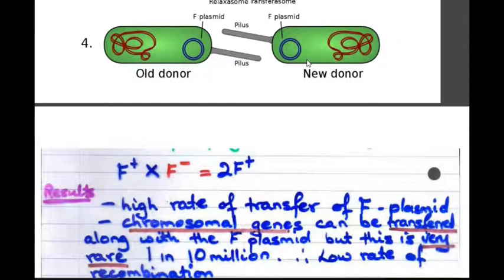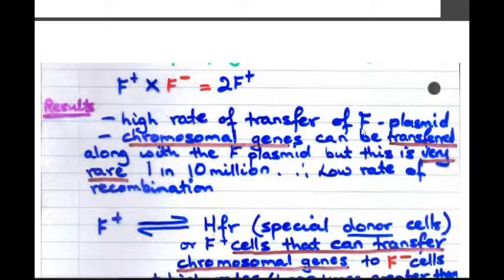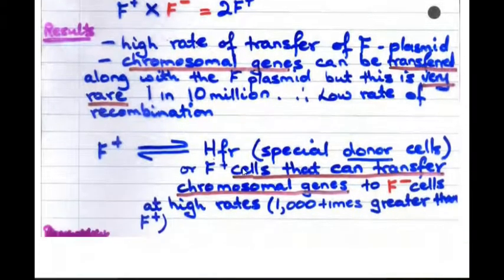There is no recombination here. So, not that there is no recombination. If there is any recombination at all, it will be at a very low frequency. I've written it here. We have a high rate of transfer of the plasmid. The chromosomal genes can be transferred along with the F-plasmid, but this is very, very rare. It's one in 10 million. Therefore, we say there is a low rate of recombination.